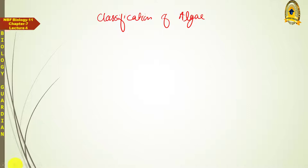Algae are classified into different groups, and the unique characteristics of members in these groups are often asked in short questions. Today we will highlight those general characters. The classification of algae is based upon pigment composition.